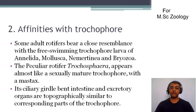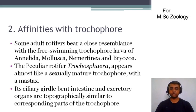The second affinities are with the trochophore larva. Some adult rotifera resemble the free-living trochophore larva. This trochophore larva is of Annelida, Mollusca, Nemertina, and Embryozoa. The peculiar rotifera, that is the trochosphere, appears almost like a sexually mature trochophore with a mastax.